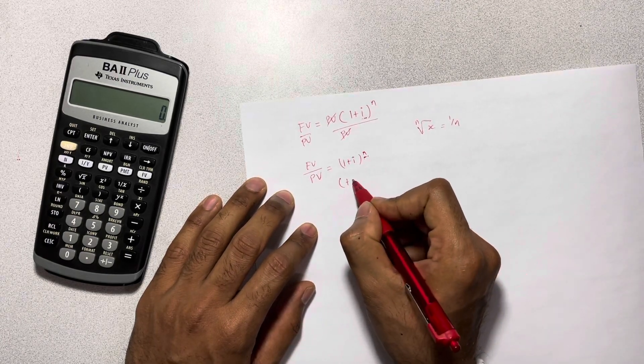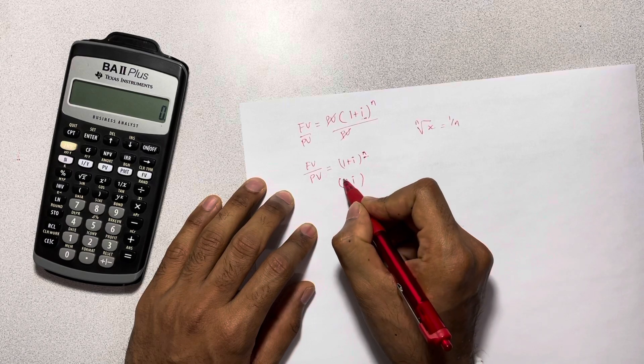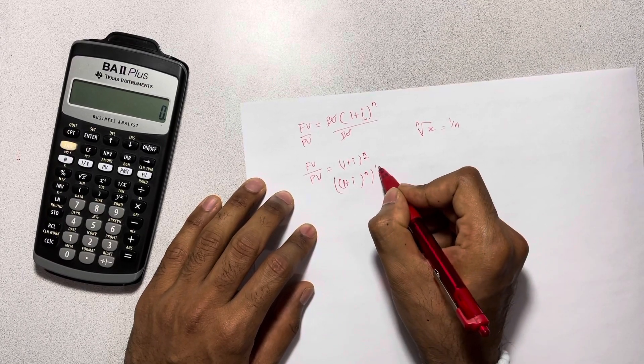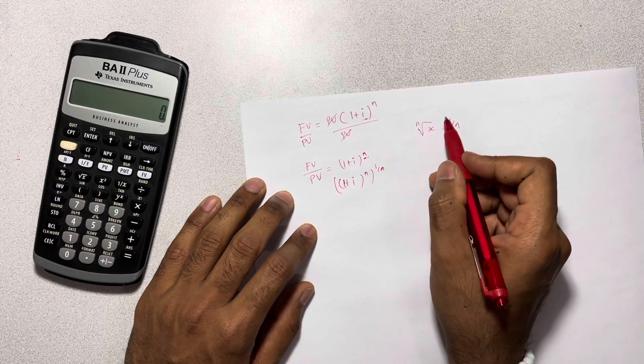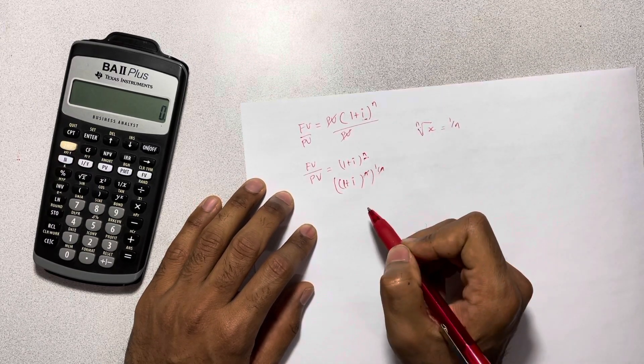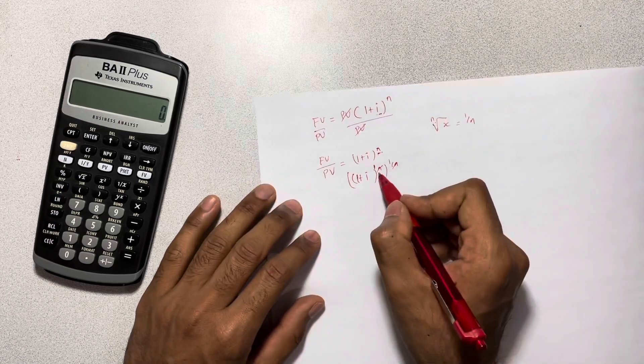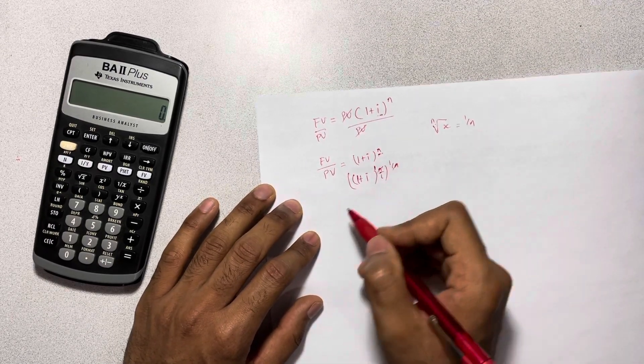So what we get is 1 plus i to the power of n multiplied by 1 over n. It's the same thing as the nth root. So that and that is gone. You're left with 1. So technically there's just 1 here because that and that is gone.